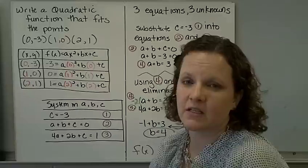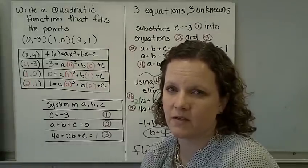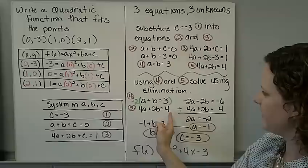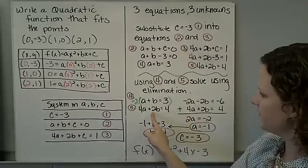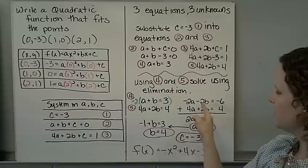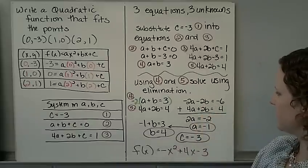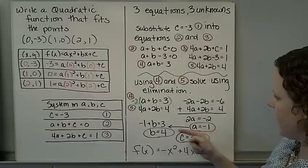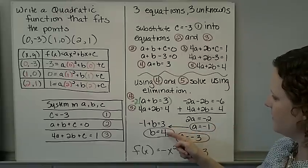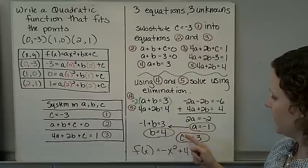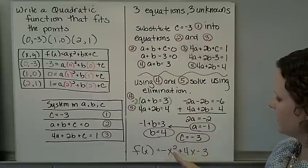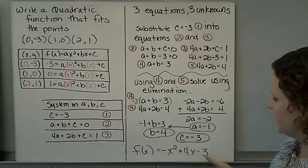Our goal is always to get two equations and two unknowns because we can solve using elimination. Substituting C = negative 3 into equation 2 gives A plus B equals 3. Into equation 3: 4A plus 2B equals 4. Now I multiply equation 4 by negative 2: negative 2A minus 2B equals negative 6. Add to equation 5, the B term cancels out, and A equals negative 1. Plug back in and B equals 4. We already have C, so A = negative 1, B = 4, C = negative 3. Our answer is negative x² plus 4x minus 3.